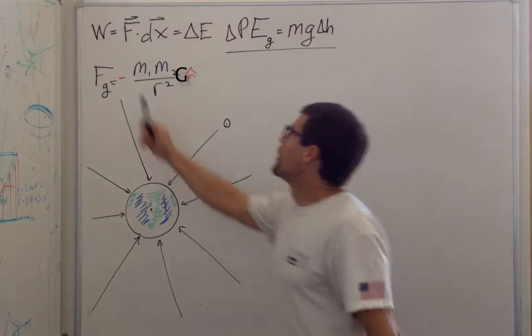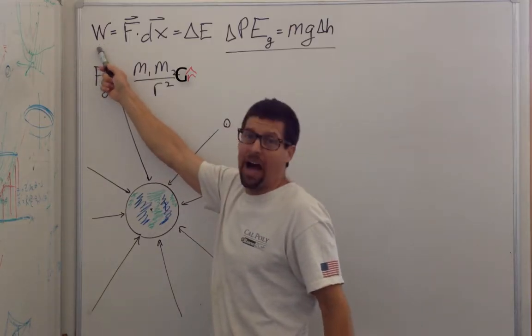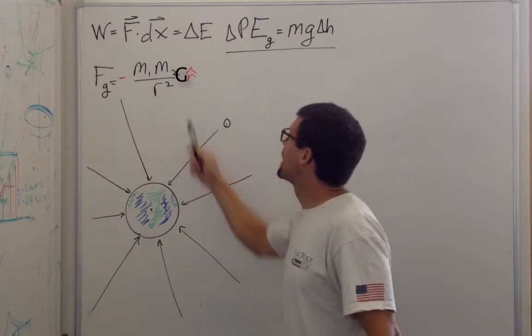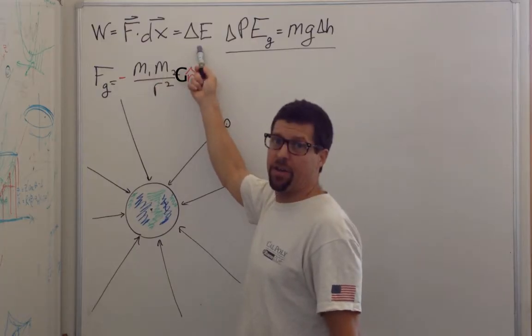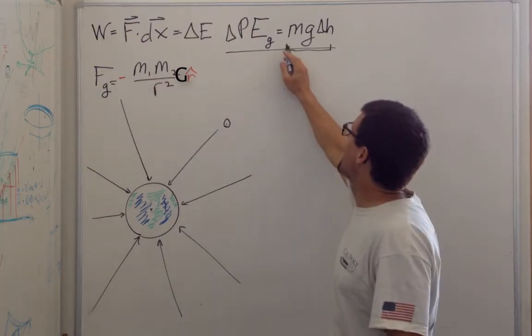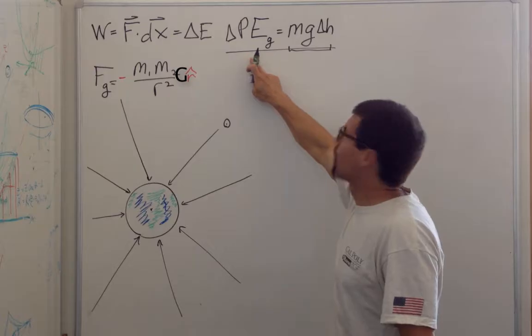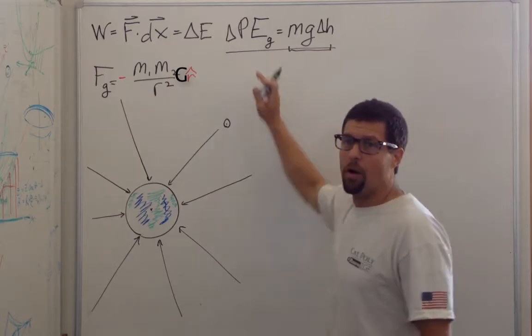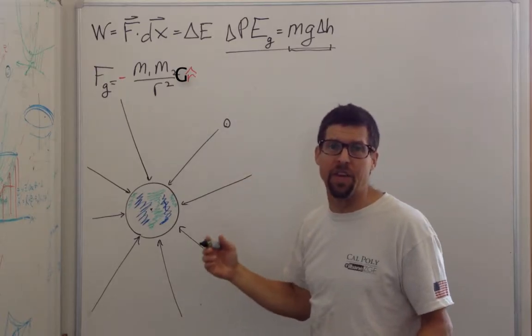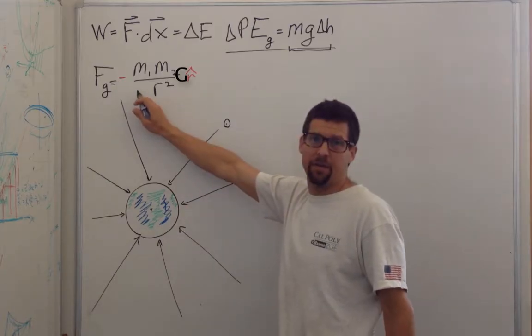So in order to do this, we need to recognize that the work I need to do to move something is equal to its change of energy. And I'm going to derive this expression for gravitational potential energy for a constant gravitational field, and then we can apply it to this varying field.